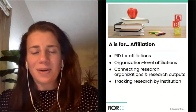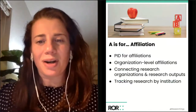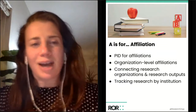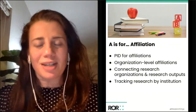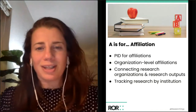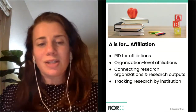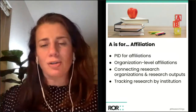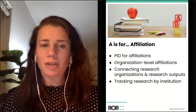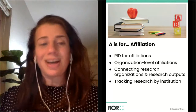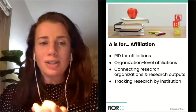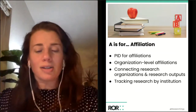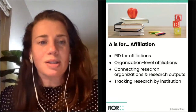Now let's get to the ABCs part. A is for affiliation. ROAR is meant to be a registry of research organization affiliations. The focus is really at that top-level affiliation use — providing open infrastructure for identifiers that can connect organizations to research outputs and to researchers, making it easier to track and discover all of the research associated with a specific institution.